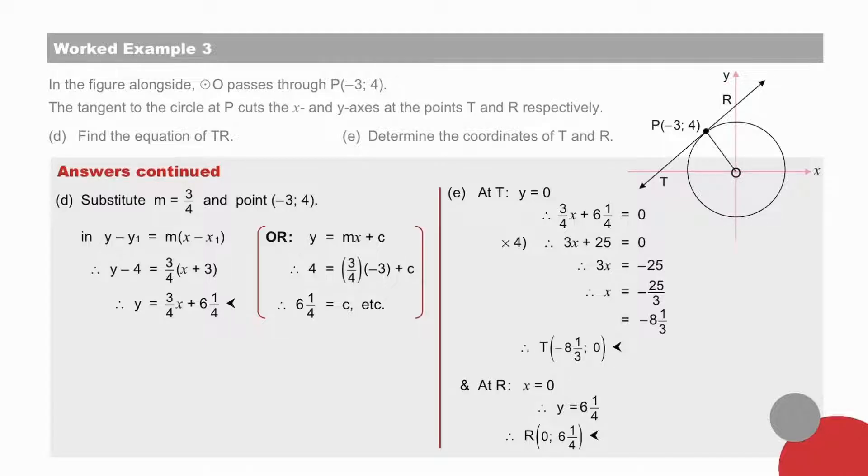Pause to check d and e. The equation of tangent TR. From c, we have the gradient equal to 3 quarters and a point on the line, minus 3, 4. So we substitute to find our answer. The coordinates of T and R. T and R are axis intercepts. At T, y equals 0, which we substitute to find the value of x. And the point is then that value of x together with y equal to 0.